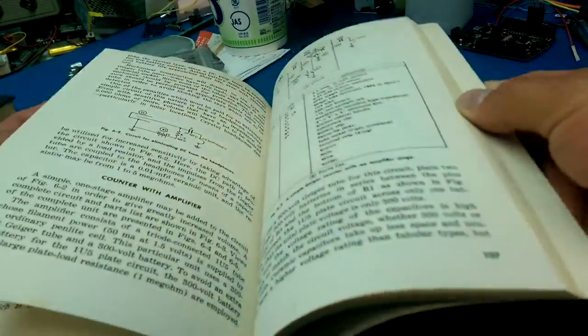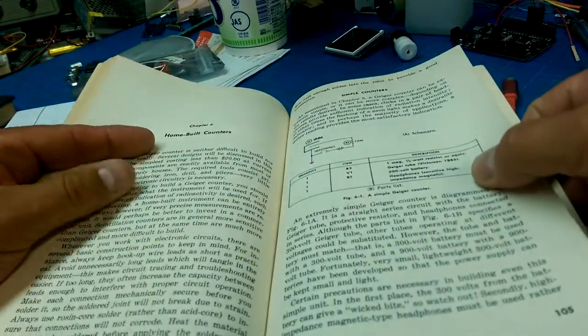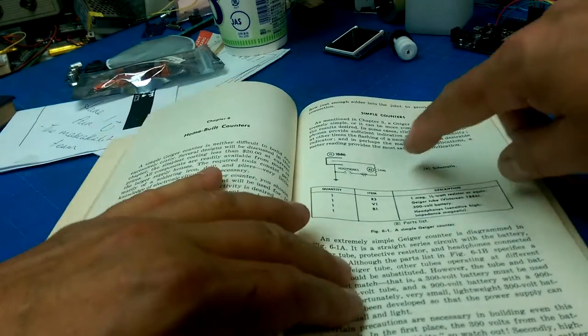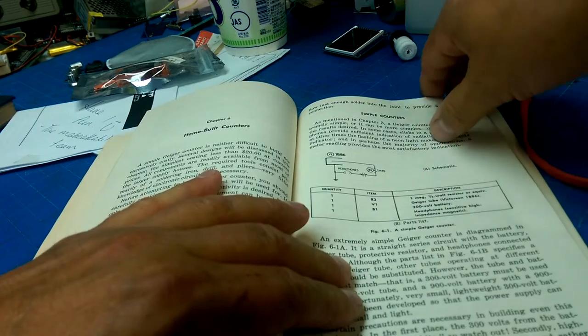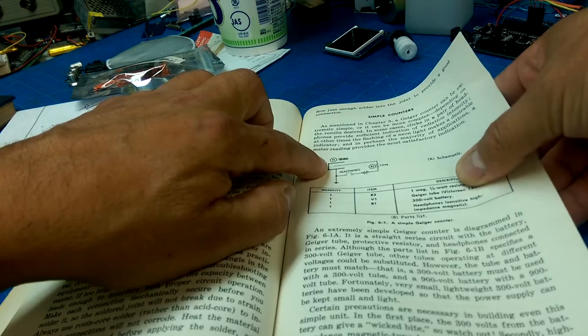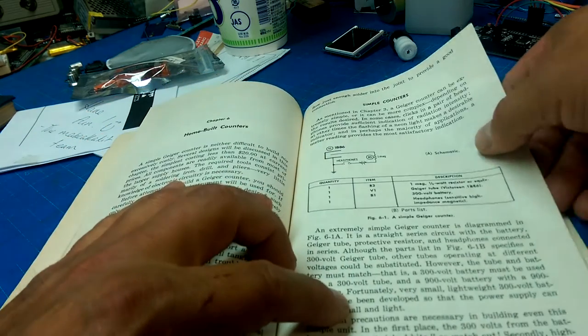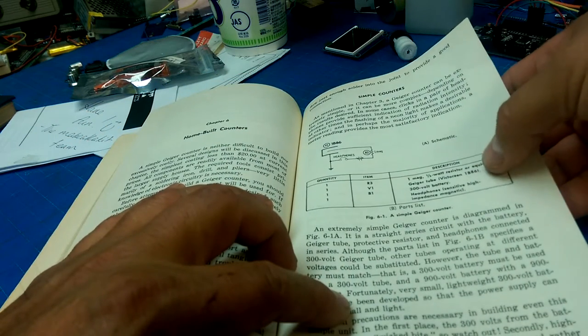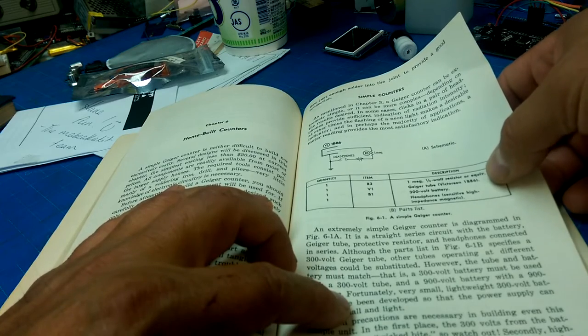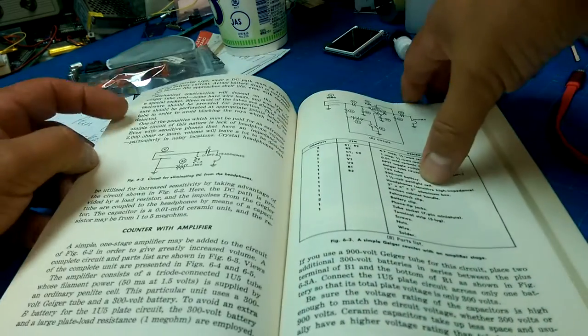This is a nice little introduction... Oh, and then home-built counters. If you want to build your own... Look at that. It's pretty simple. Headphones, some 1B86 tube, and which is a Geiger tube, a resistor, and a battery. Extremely simple.